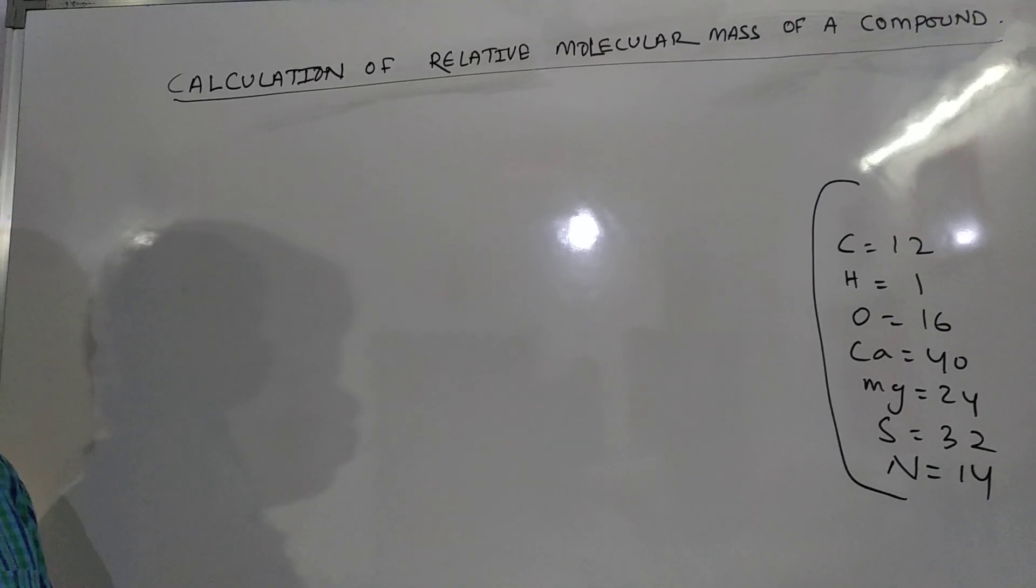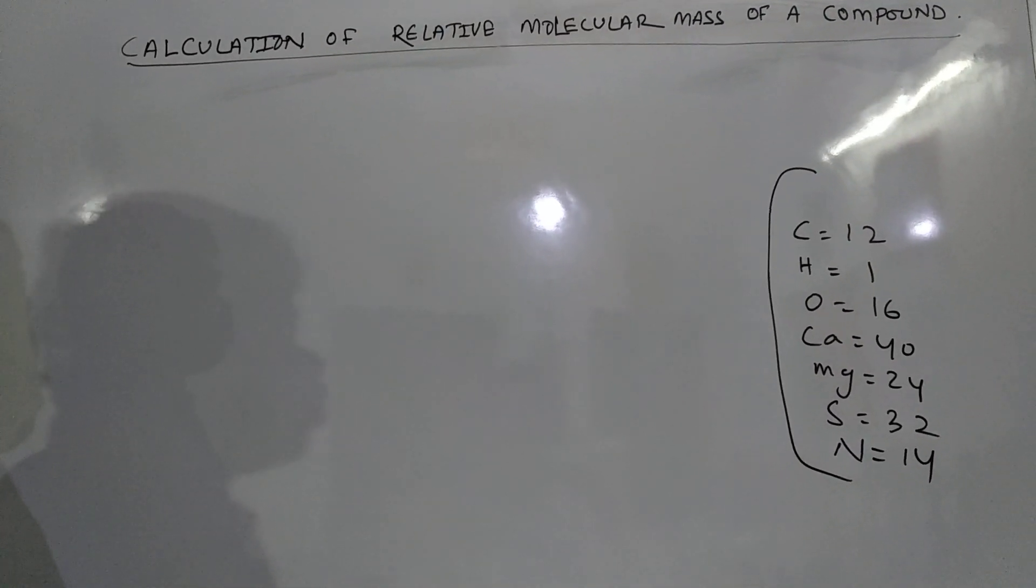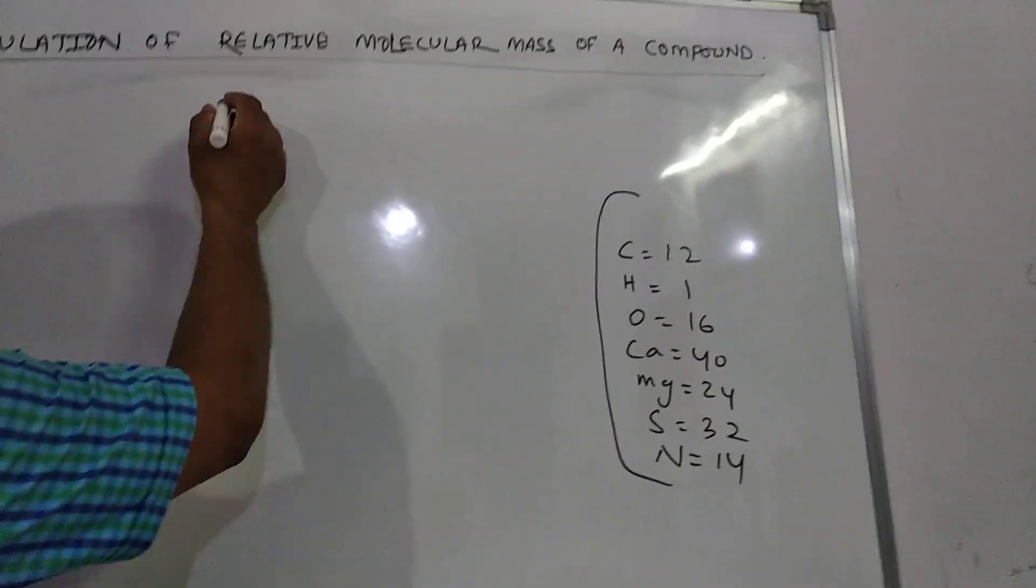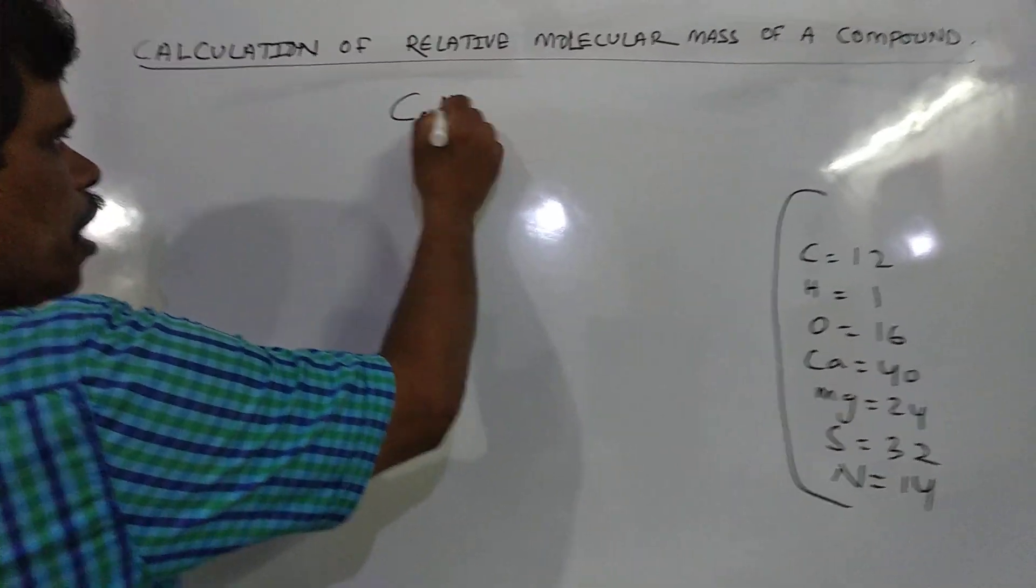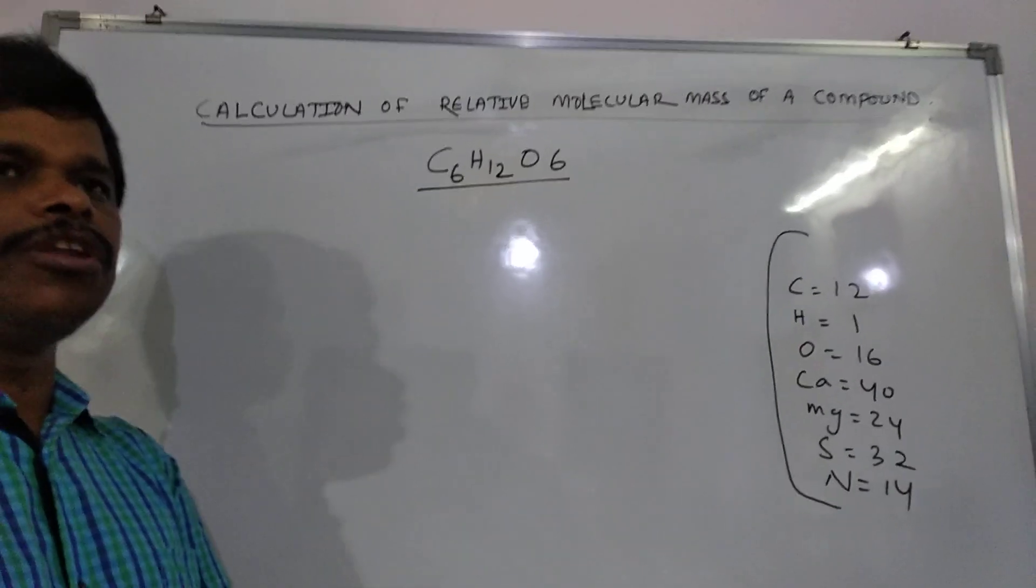We will take one example. Suppose we will calculate the relative molecular mass of glucose C6H12O6. Glucose, we will calculate the molecular mass.